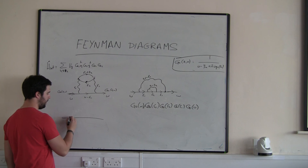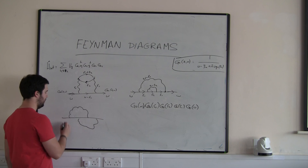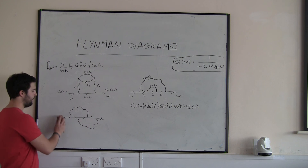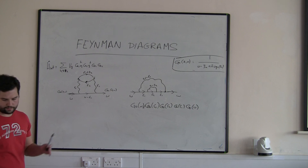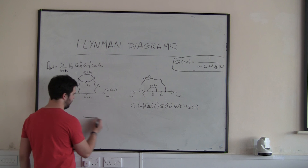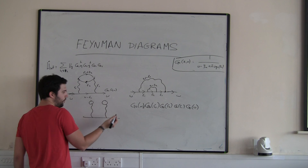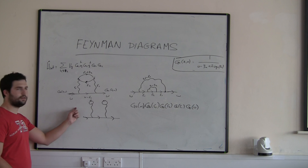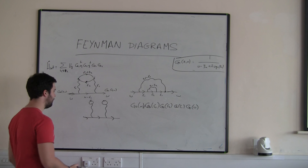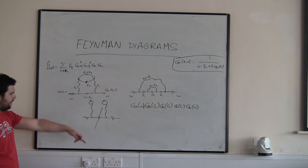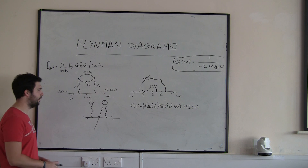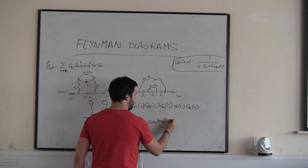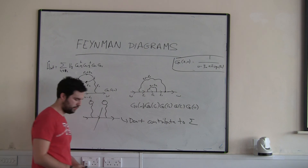More second-order diagrams contribute to the self-energy because I cannot split them into two parts. However, if we evaluate all possible contractions and end up with a term where I can cut a line to split the diagram, that term doesn't contribute to the self-energy — I'd just be inserting a line into one of the non-interacting Green's functions. Terms like these don't contribute to sigma, the self-energy in Dyson's equation.